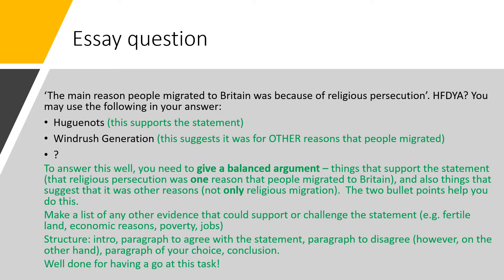For the essay question I'm going to talk it through in a little bit more detail. I've broken down the question with the writing in green on the screen. The question is: 'The main reason people migrated to Britain was because of religious persecution. How far do you agree?' You may use the following in your answer, and you can see that you get given two bullet points. Huguenots is one example of something that would support the statement in quotation marks.